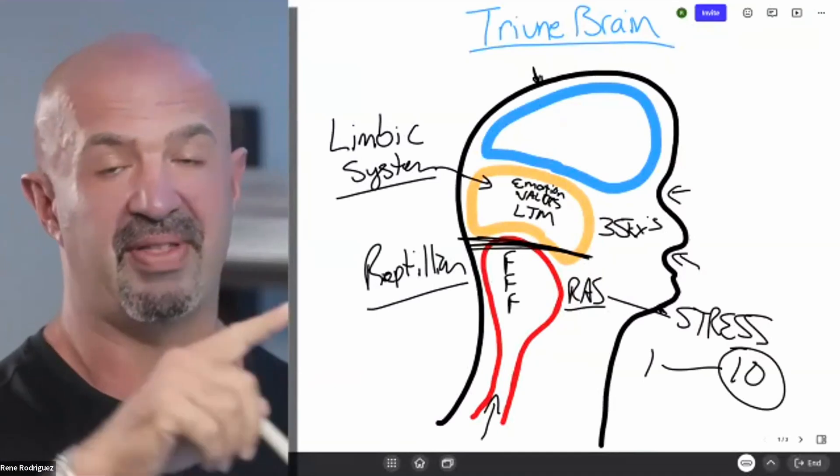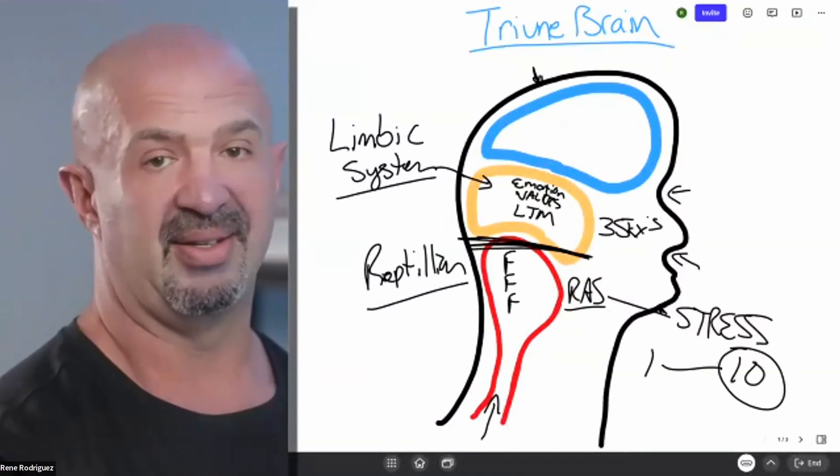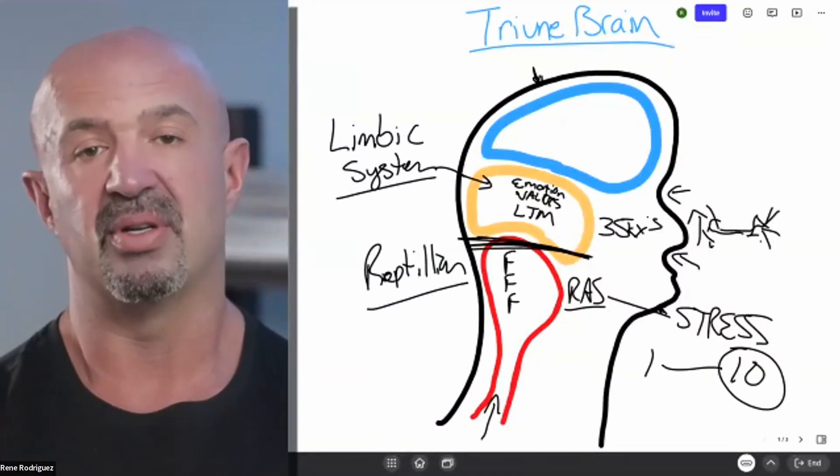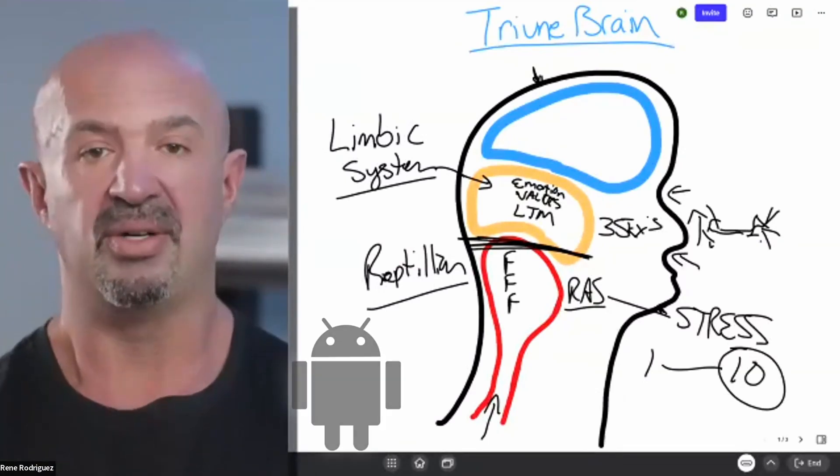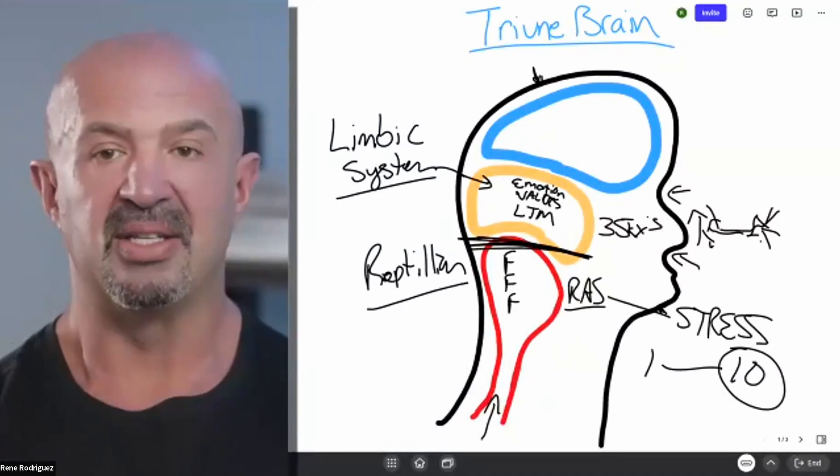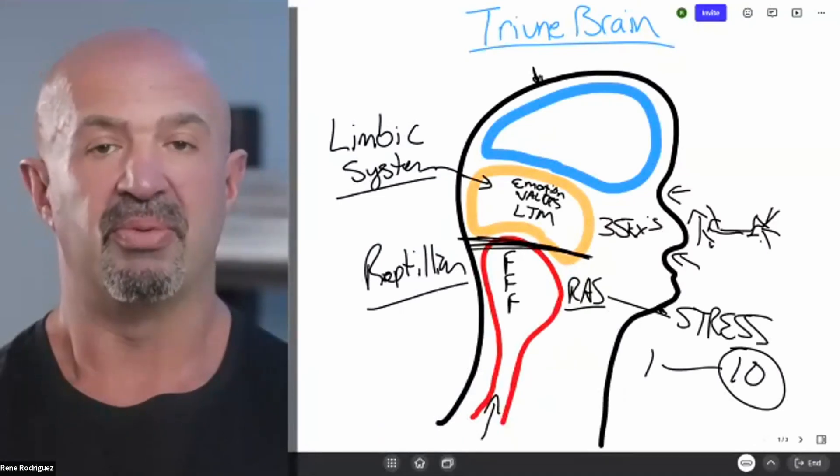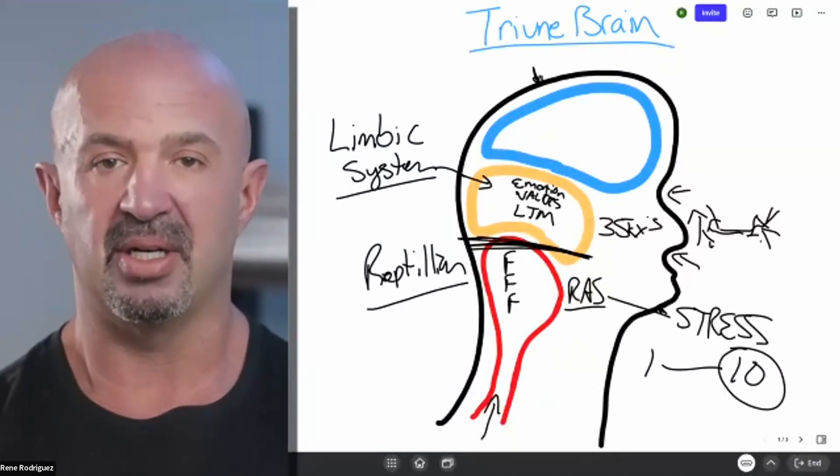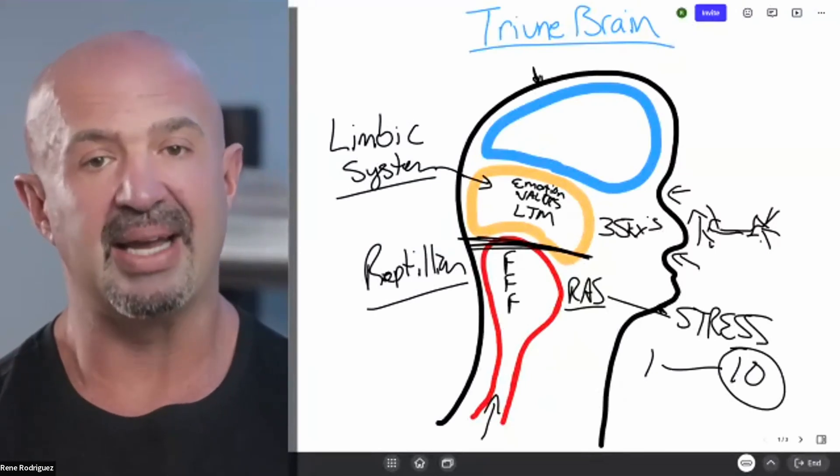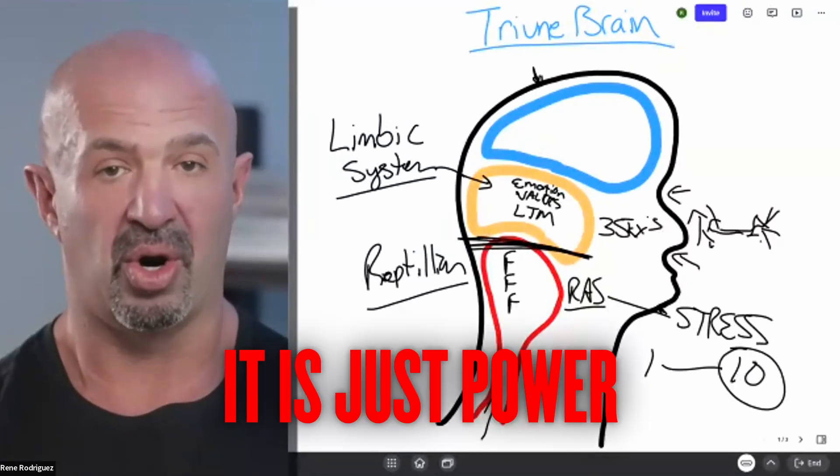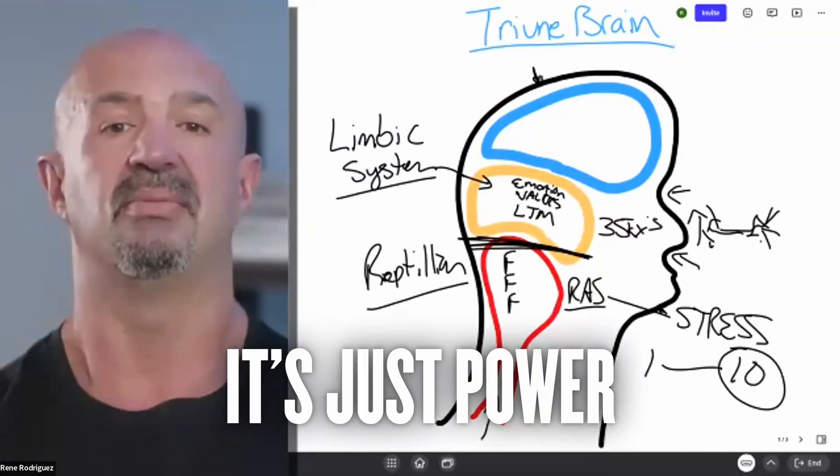This part of the brain has 35,000 times more neurons that fire when we make a decision versus our logical centers. If you don't believe me, have you ever seen somebody in love with the wrong person? This is the same part of the brain that chooses Android versus iPhone. It's very powerful. And when you're selling something or persuading or getting somebody to make a big decision, you have to overcome this part of the brain and trigger it and get it on your side. It is just power.